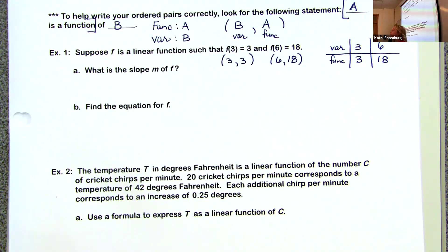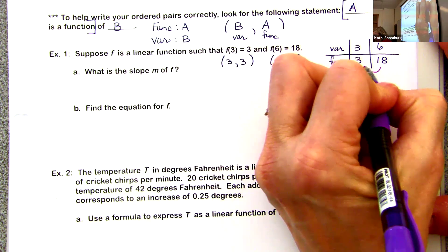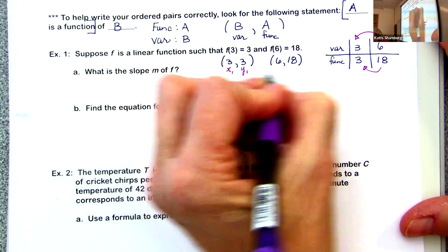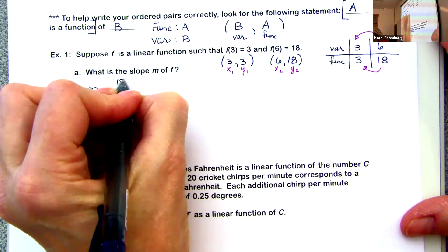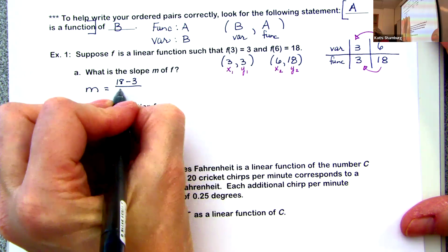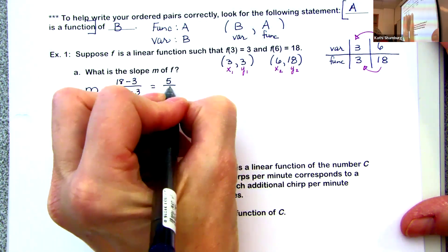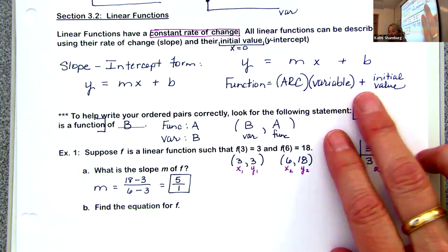Part A: what is the slope? Using change in function over change in variable from the table, or the formula (y₂ − y₁)/(x₂ − x₁): (18 − 3)/(6 − 3) = 15/3 = 5/1. The slope is 5.